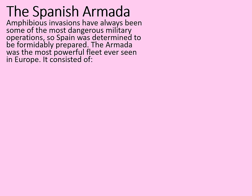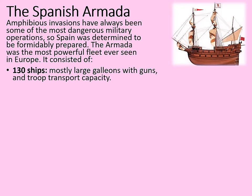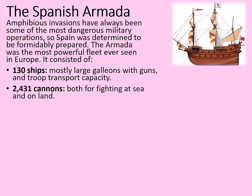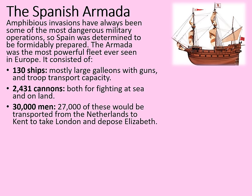Let's consider the Spanish preparations. Amphibious invasions have always been some of the most dangerous military operations, going right back to the Norman Conquest or in modern times with the D-Day landings. Spain was determined to be formidably prepared. The Armada was the most powerful fleet ever seen in Europe — 130 ships, mostly large galleons with guns, a large troop transport capacity, and lots of supplies. They were taking 2,431 cannons for fighting at sea and on land. 30,000 men were prepared, with 27,000 to be transported from the Netherlands to Kent to take London and depose Elizabeth, and 3,000 manning the ships.